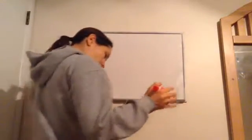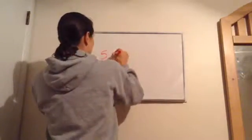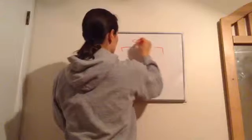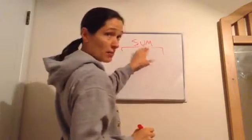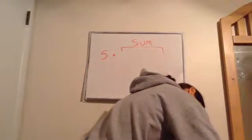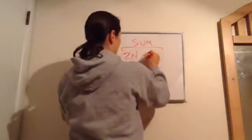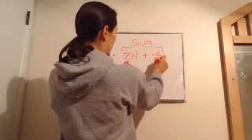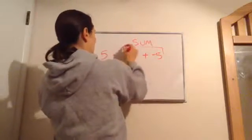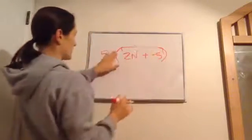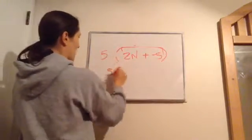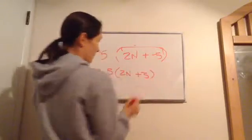Next one: 'five times the sum of twice a number and negative five.' So I'm doing five times something — the sum of twice a number and negative five. That's my sum, and I'm multiplying it by five. That becomes our expression: five times (2n + negative five).